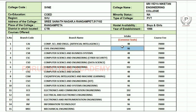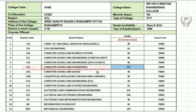Civil Engineering has 96 seats. Computer Science and Business Systems has 48 seats. Computer Science and Cyber Security has 48 seats. Computer Science Engineering with Data Science has 48 seats. Computer Science Engineering has 192 seats. Computer Science and Design has 48 seats. Computer Science Engineering with Artificial Intelligence and Machine Learning has 48 seats.